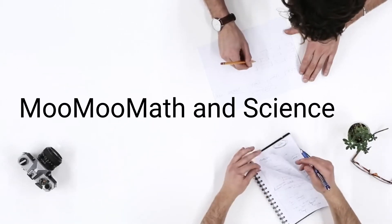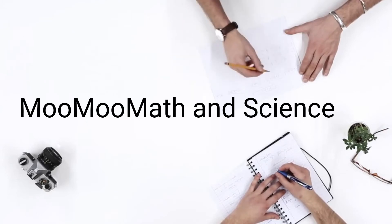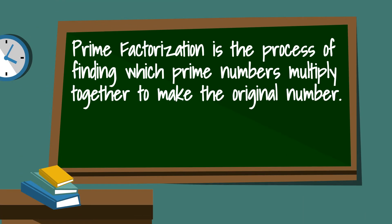Welcome to Moomoo Math and Science. In this video, I'd like to talk about the prime factorization of 18 and 90 using a factor tree. Prime factorization is the process of finding which prime numbers multiply together to equal the original number.